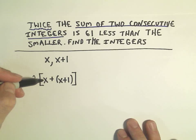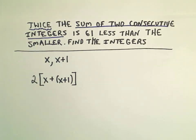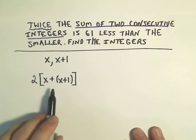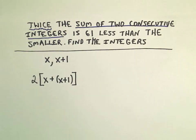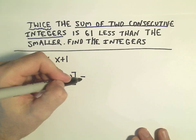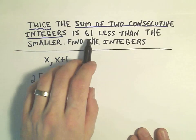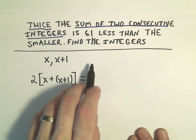If you don't use the brackets, you're only multiplying the smaller one by 2. So now we've got twice the sum of two consecutive integers. Is, you can read is as an equal sign. It's 61 less than the smaller.